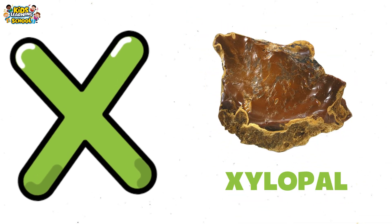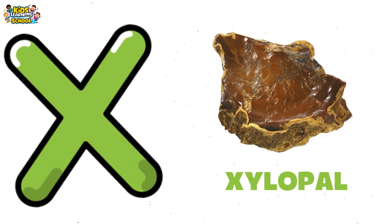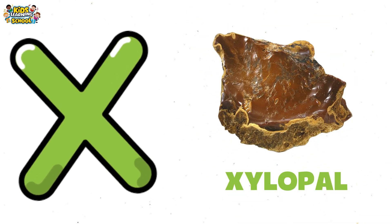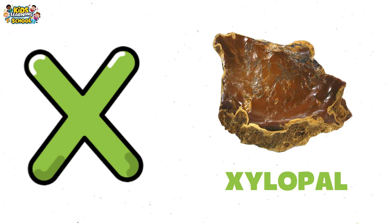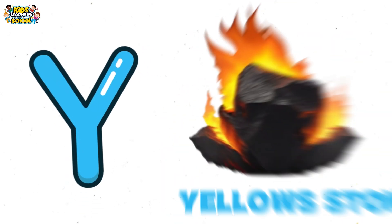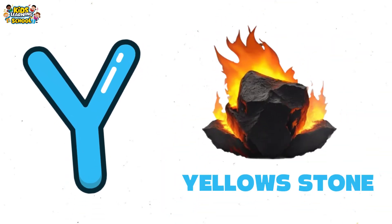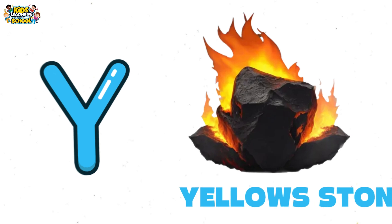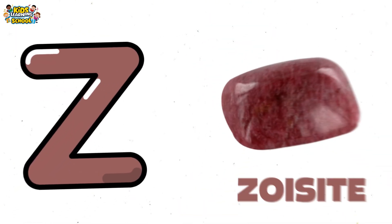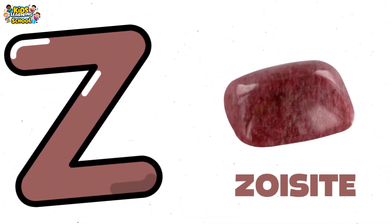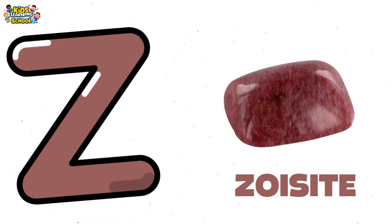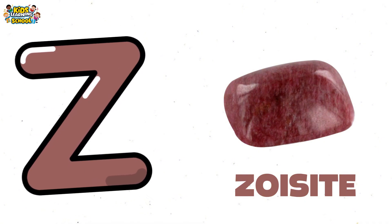X is for xylopal, wood turned to gem within. Y is for yellowstone tuff, born of flame. Z is for zoisite, wild in name.